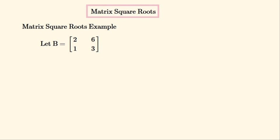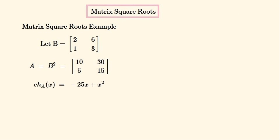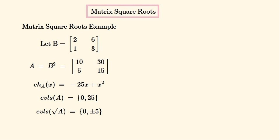Now for an example of how to calculate the square root of a matrix using this method. We'll start off with this 2×2 matrix and set A to be its square, so that when we find the square root of A we'll get B back again. This is the characteristic polynomial of matrix A, found using a method described in another video. After solving this polynomial we get the eigenvalues of A, and then we find the square roots of all these eigenvalues, giving us the possibility of two different eigenvalues: 5 and −5 for the square root of matrix A. We'll start with the primary or positive square root.